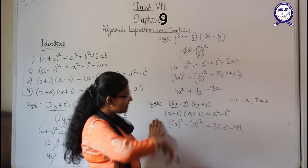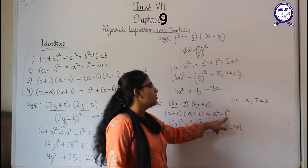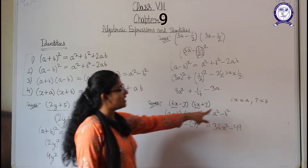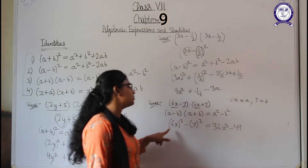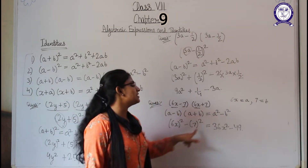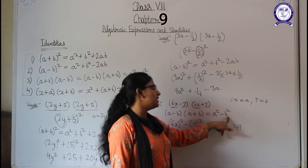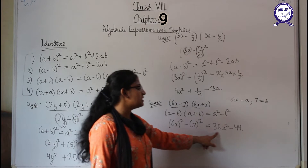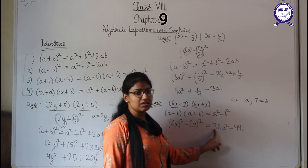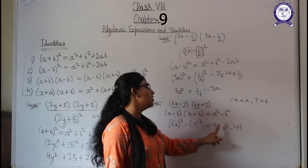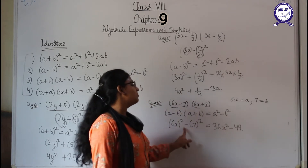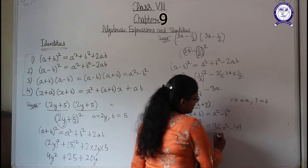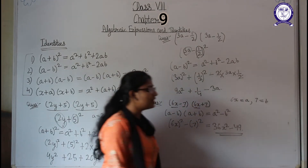Substituting the values: (6x)² − (7)² = 36x² − 49. So the answer is 36x² − 49, obtained using the third identity.